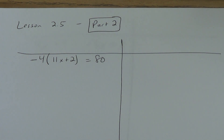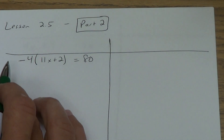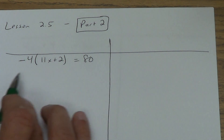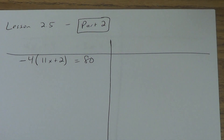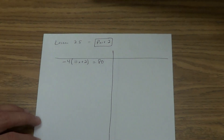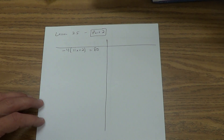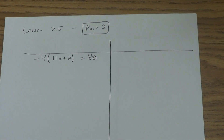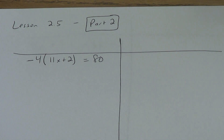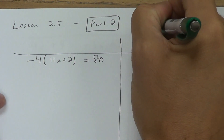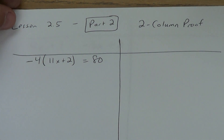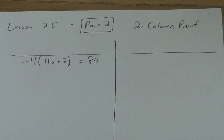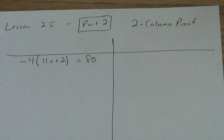Today, in this video, I'm going to show you how to use them. What I have here looks like a big T — a line here and a line here. This thing is called a two-column proof. It's called a two-column proof because it is a proof that uses two columns.